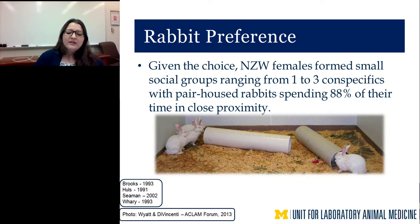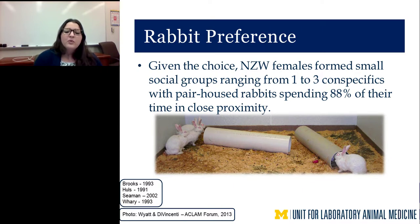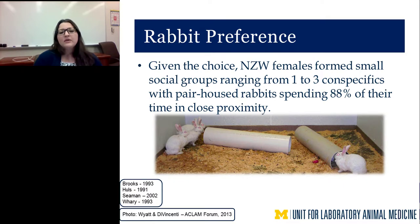Other studies showed similar results: when given the choice, New Zealand white females formed small social groups of one to three conspecifics, with house rabbits spending about 88% of their time in close proximity. This high percentage once again demonstrates the extremely high value rabbits place on social interaction with conspecifics.